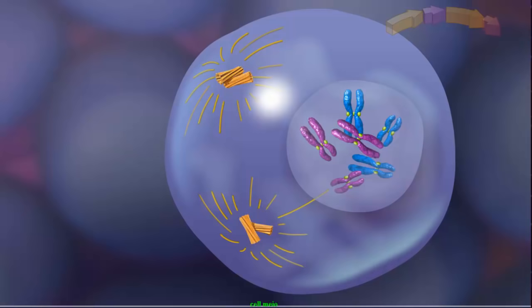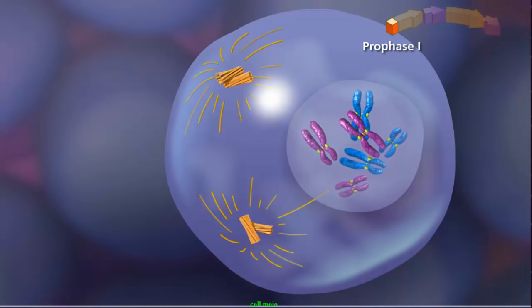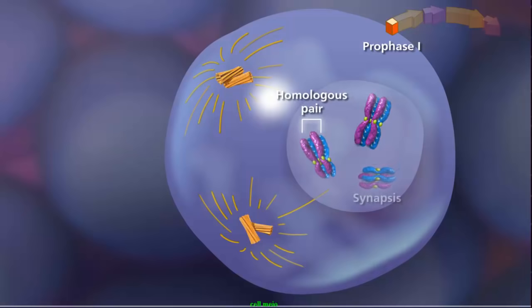The first event occurs during prophase I, when homologous pairs of sister chromatids lie side by side in a process called synapsis, forming a tetrad or bivalent. The homologous chromosomes share similar, but not necessarily identical, genes.